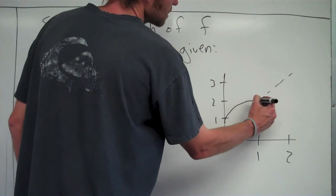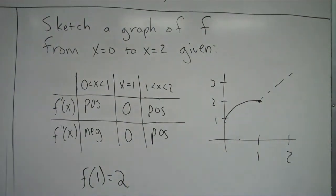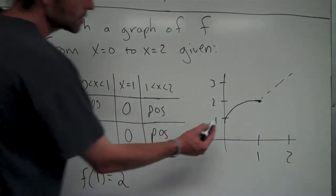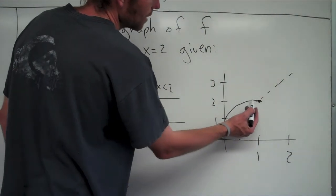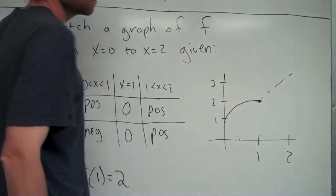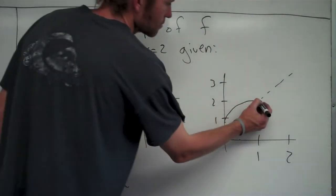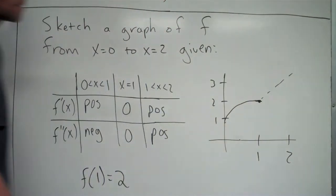And again, I want to draw it so it flattens out and has a slope of 0 at x equals 1. So you can see my graph increases in value, but has concave down. And at x equals 1, has a slope of 0, clearly a slope of 0.